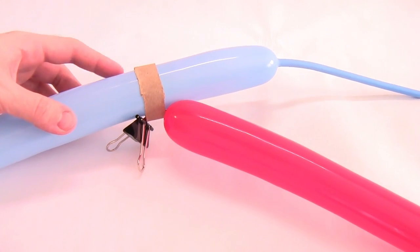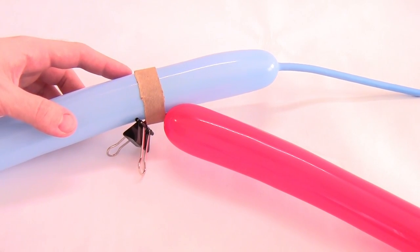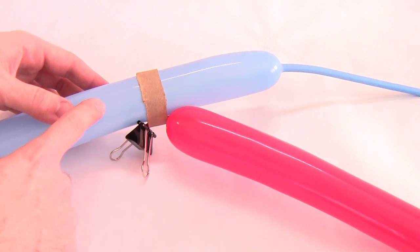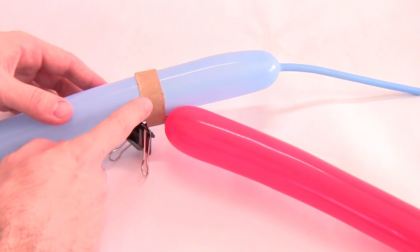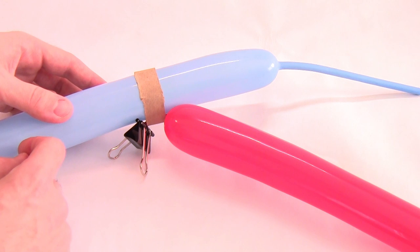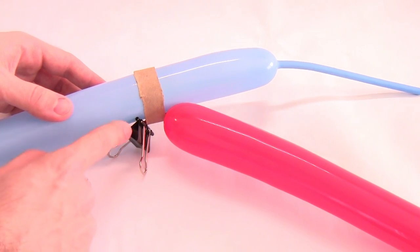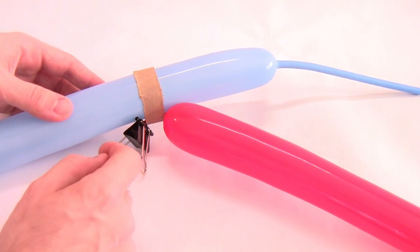This next part can be tricky, takes a little practice, and is much easier with two people. Inflate the second balloon such that it presses up against the inside of the cardboard ring and pinches the nozzle of the first balloon shut. You should be able to remove the binder clip and have the first balloon stay inflated.